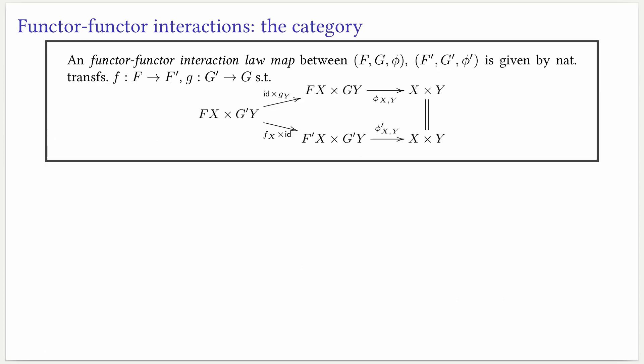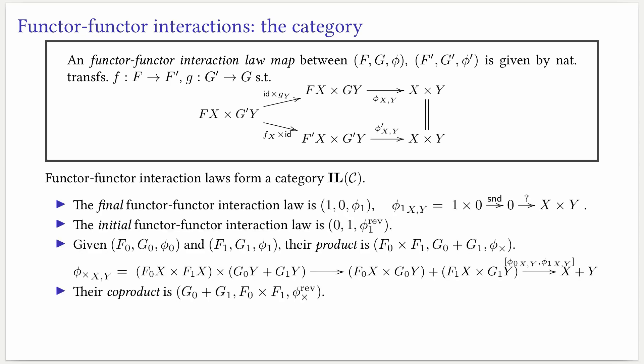We will now move on and see that functor-functor interaction laws form a category. The notion of map between interaction laws is given as follows. Imagine we have an interaction law between f and g named phi, and another interaction law given by f prime, g prime, and phi prime. Then an interaction law map is simply a transformation in the forwards direction between f and f prime, and one in the backward direction between g prime and g. This has to be subject to certain coherence diagrams. Indeed, functor-functor interaction laws form a category, which we'll name in this way.